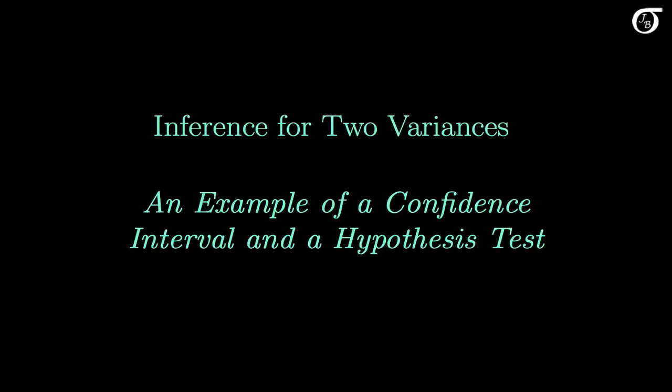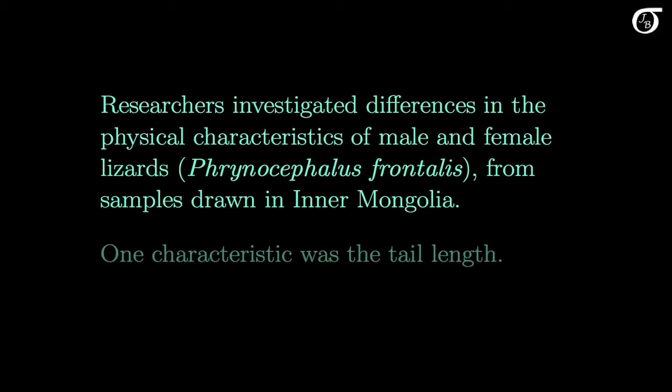Let's look at an example of inference for two variances. Here we'll look at an example of a confidence interval and a hypothesis test based on the assumption of normally distributed populations. Here's the example we'll look at.